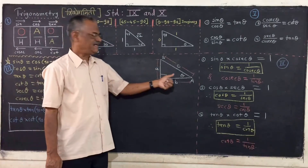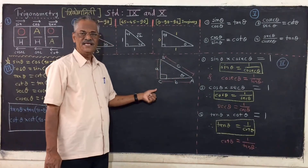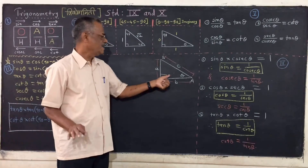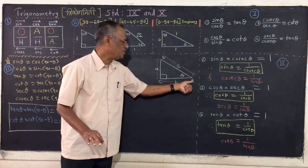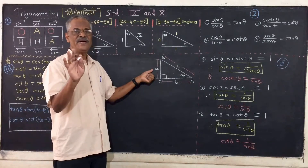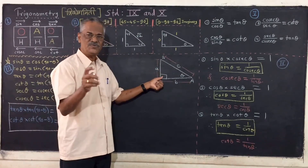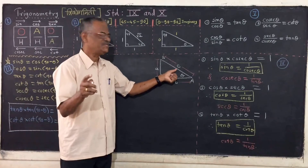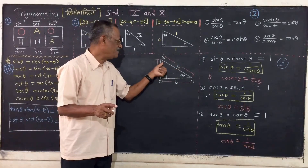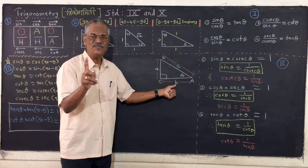Let us see triangle ABC, with right angle at C. Opposite to angle A, the side is denoted by small a. Opposite to angle C, the hypotenuse is denoted by small c. And opposite to angle B, the side is denoted by small b.